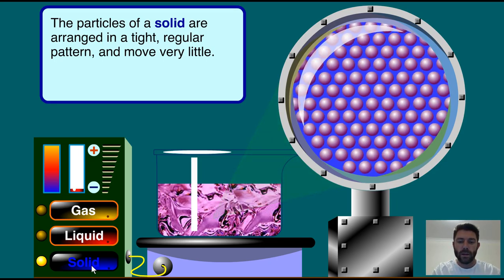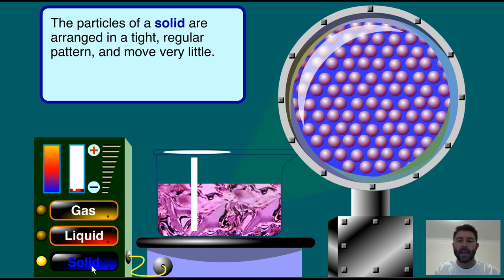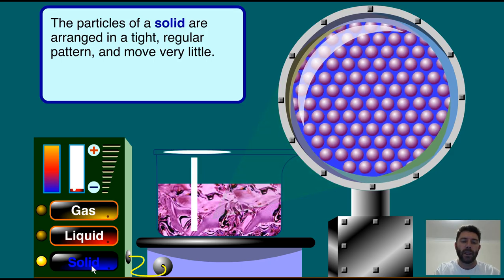When it freezes, it will freeze in the shape it was in when it changed state. The terms for changes of state are: solid to liquid is melting; liquid to gas is evaporating; gas to liquid is condensing or condensation; and liquid to solid is freezing. That covers the animation — now we'll go back and look at the properties of each of the states of matter.